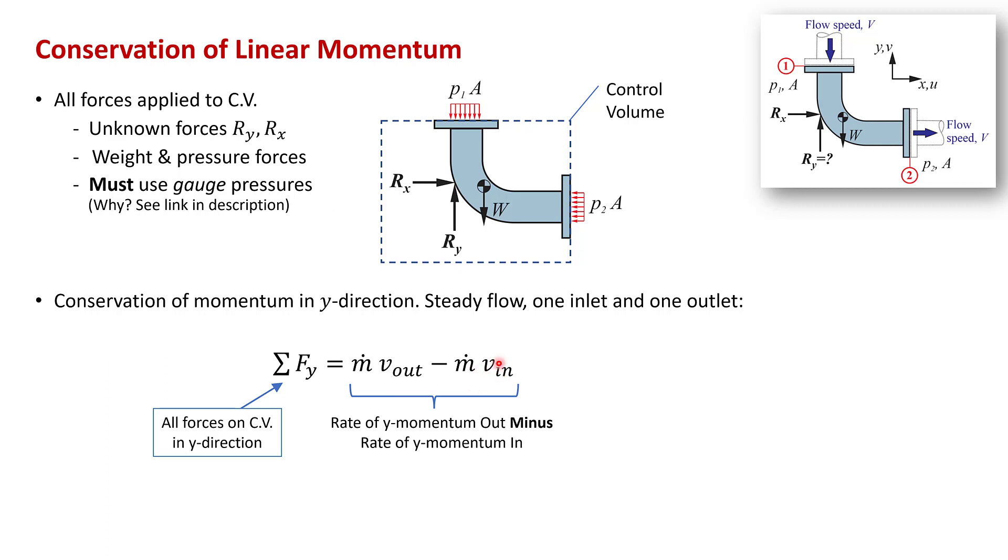Now notice that v here is the y component of velocity. So this becomes m dot v2 minus v1. v2 is the outlet, v1 is the inlet. And I've combined the mass flow rates here because we have a constant mass flow rate through the elbow. We have a steady flow with one inlet and one outlet.